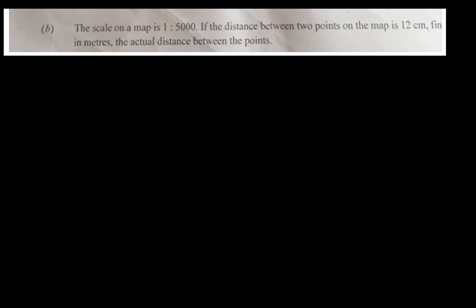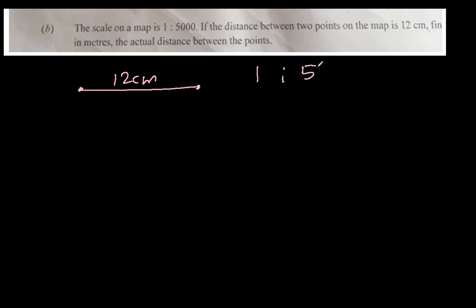Part B of the same question says the scale on a map is 1 to 5000. If the distance between two points on the map is 12 centimeters, find in meters the actual distance between the points. A scale of 1 to 5000 means if the distance between two points is 1 centimeter, the actual distance on the ground will be 5000 centimeters.